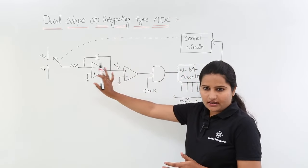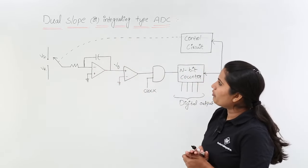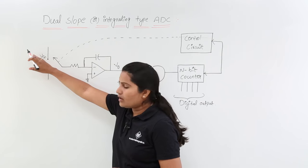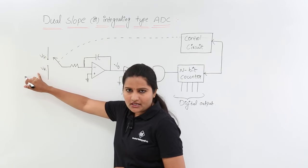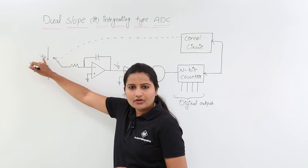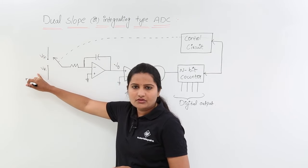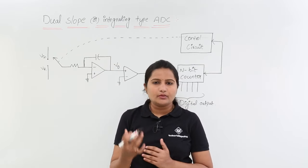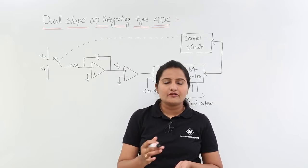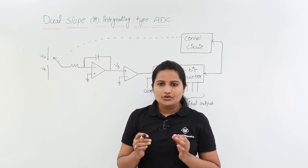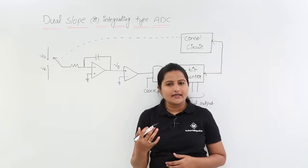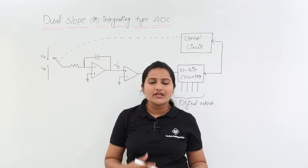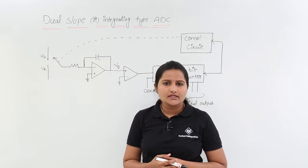The block diagram and circuit for dual slope or integrating type ADC is as follows. You can observe a switch which is connected to V-in and V-reference. Please keep in mind when you are taking your V-in and V-reference, those must be in opposite polarity. For example, if your input voltage is in positive polarity, you need to take your reference in negative polarity. So your input voltage and reference voltage must be in opposite direction.